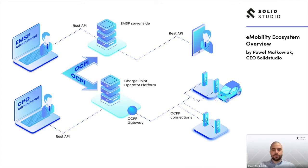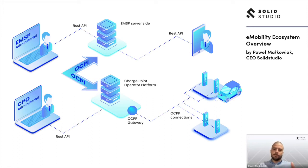Let's start from the end user perspective. What's actually happening is that the EV driver needs to be able to search for a charging station. We are in the top right corner of this diagram — the EV driver is holding their phone with an EMSP application. In these kinds of applications you can usually log in, register, find charging stations, see the tariffs, navigate to them, and basically start charging.